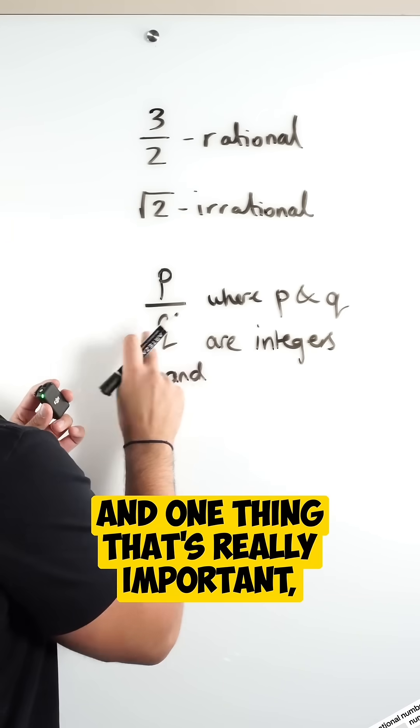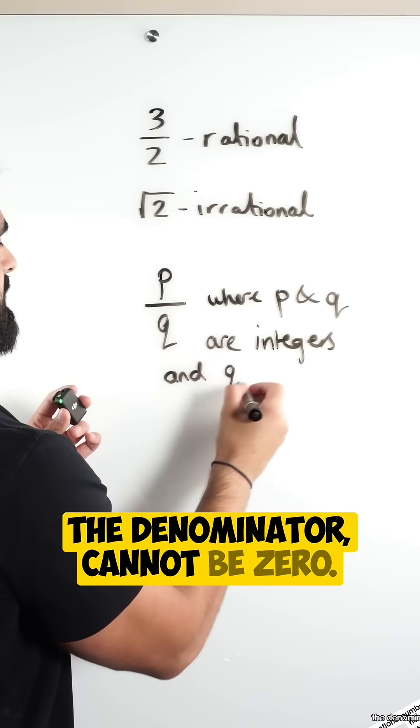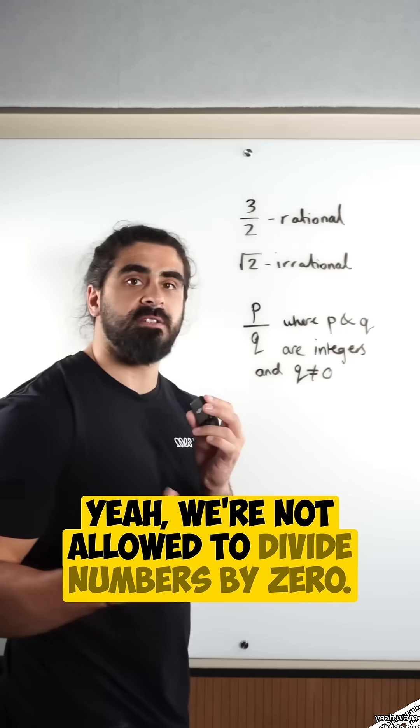And one thing that's really important, the denominator cannot be 0. Yeah, we're not allowed to divide numbers by 0.